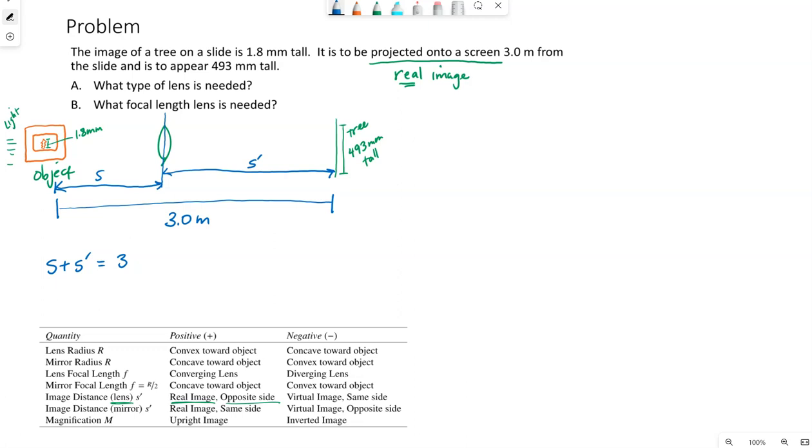Because they give us the size of the image, this 493 is H prime, and the size of the tree on the actual slide is the height of the object, we can find the absolute value, or the magnitude, of this magnification. This image is much bigger than the object, which is part of the purpose of a projector.